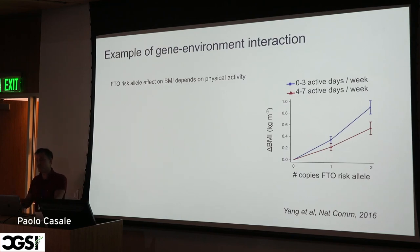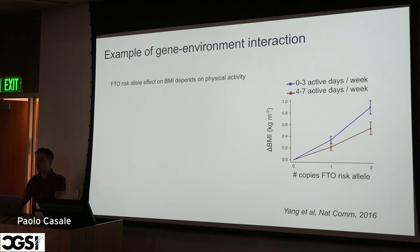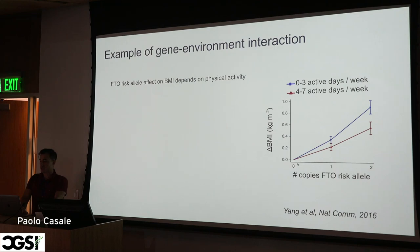Let me start by explaining what gene-environment interaction is. The FTO locus has been robustly associated with BMI, with the risk allele increasing BMI. In this figure from a paper published in Nature Communications, we can see the effect of BMI as a function of the number of copies of the FTO risk allele. The population is stratified into two groups: people who are less active (0 to 3 days a week) and people who are more active (4 to 7 days a week). The effect of the FTO risk allele varies between the two groups — that's how a gene-environment interaction looks.